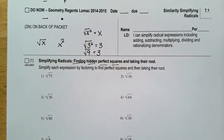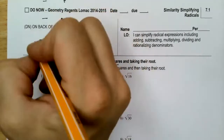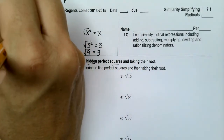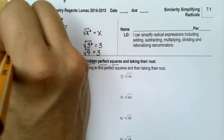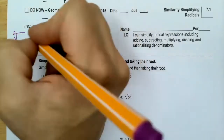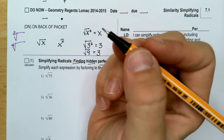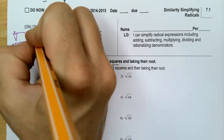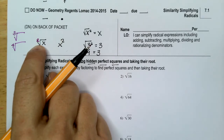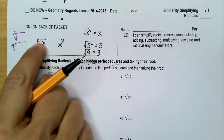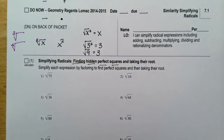This symbol is called a radical, and it can have any index or any root. A third root, a fourth root — when there's no number shown, it is just a square root, or a second root. There's an understood 2. We don't write it because if there's nothing there we know it's a 2, since 2 is the smallest index a radical can have.